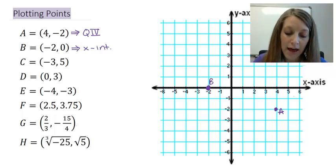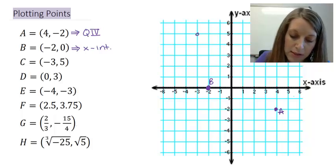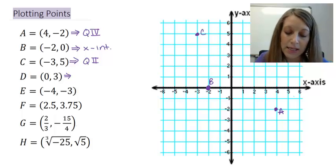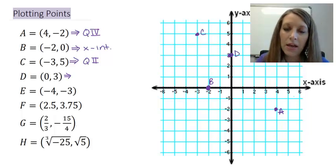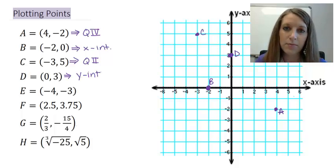Point C is left 3 units and then up 5 units. So point C would be up here. I can see that's in the top left quadrant. So that would be in quadrant 2. Point D is I do not count left or right any, but I count up 3 units. So point D would be right here, and that is intercepting the Y axis, so I call that a Y intercept.